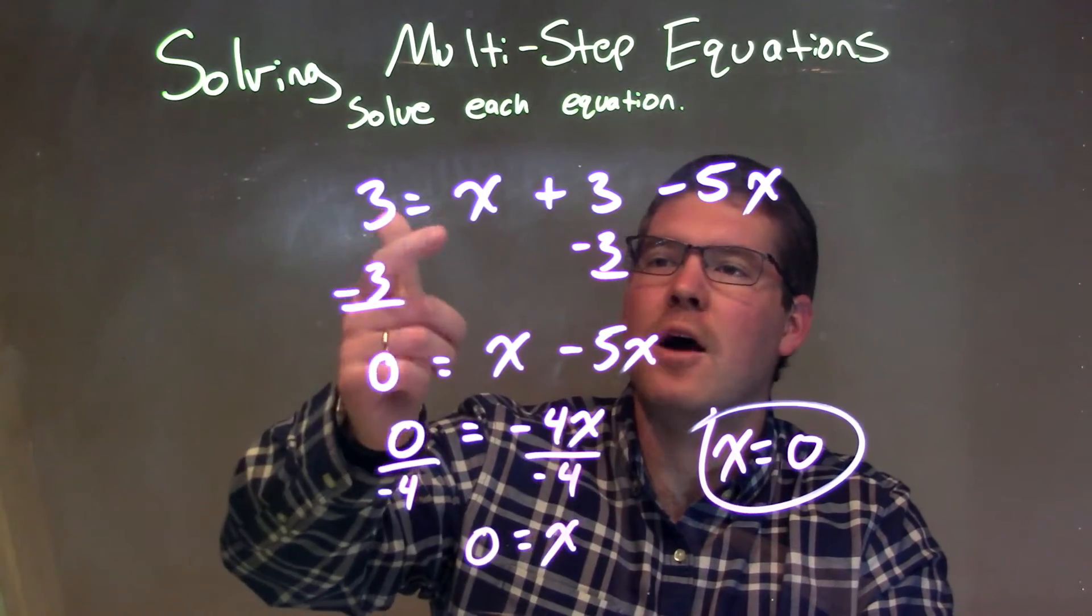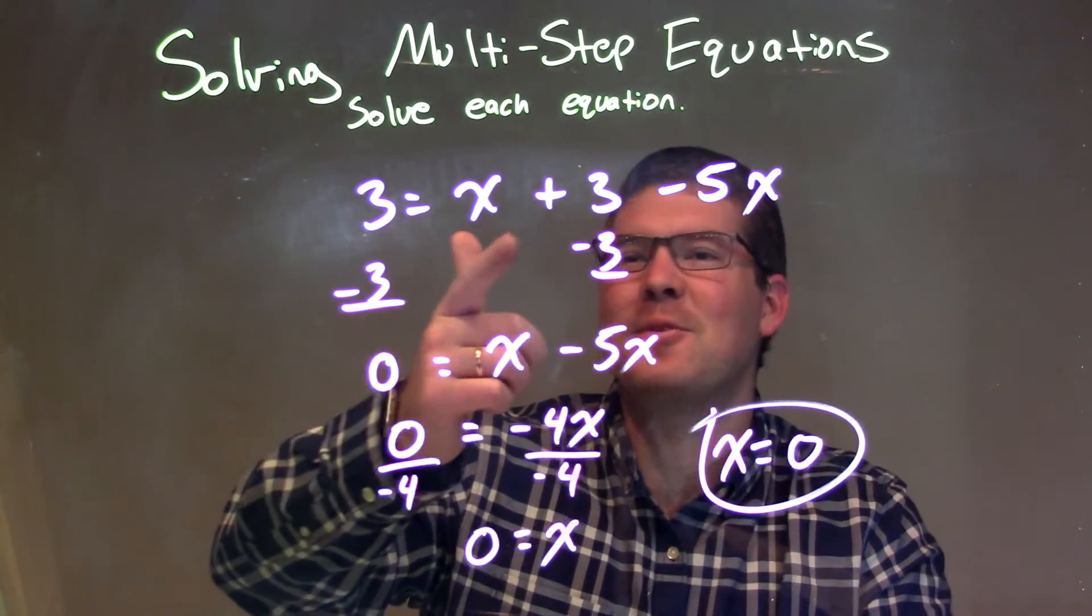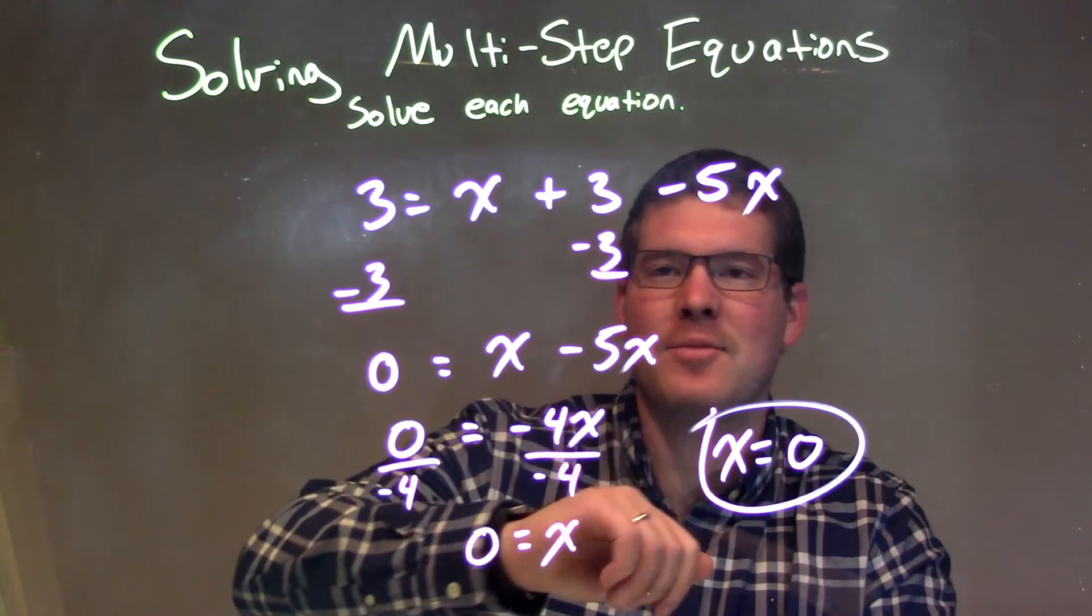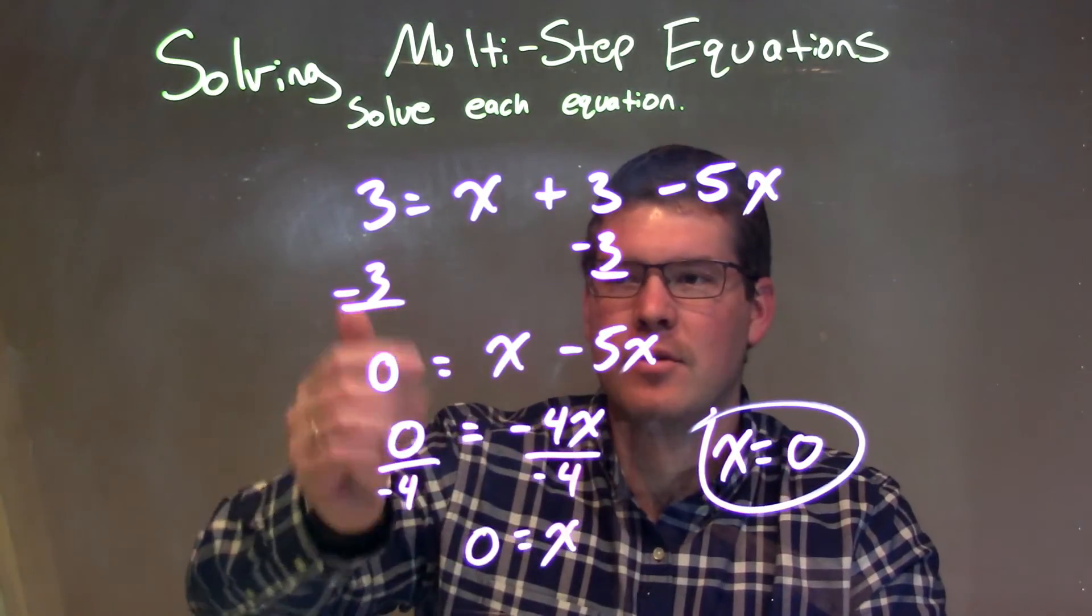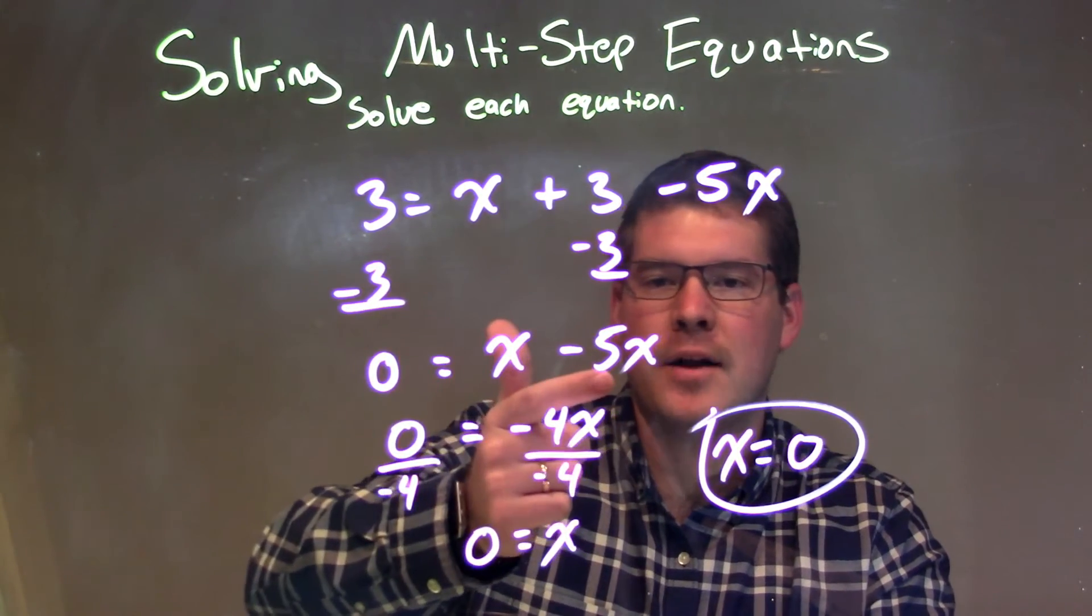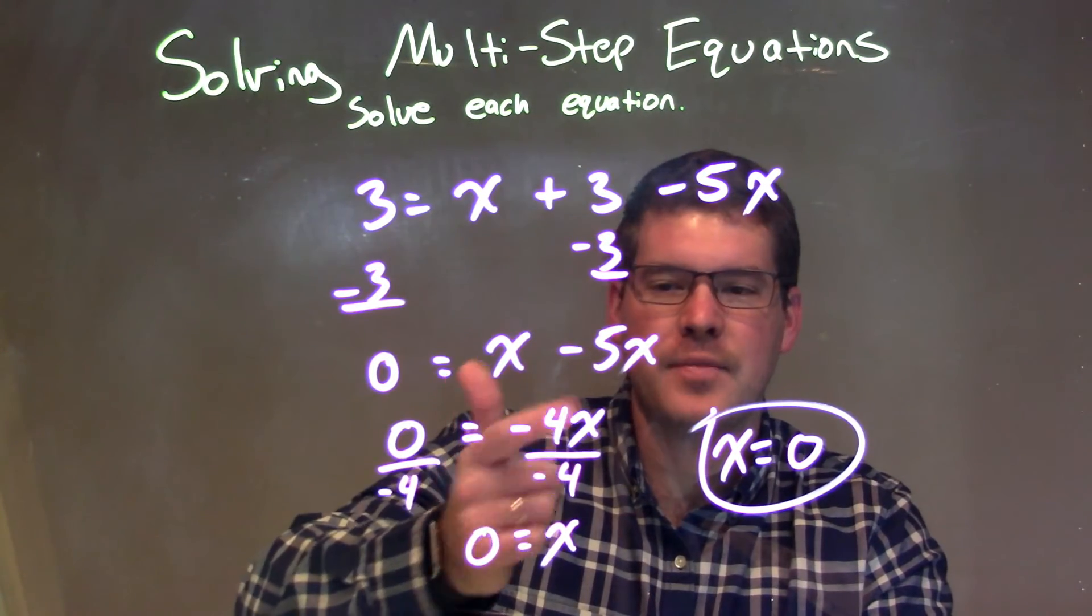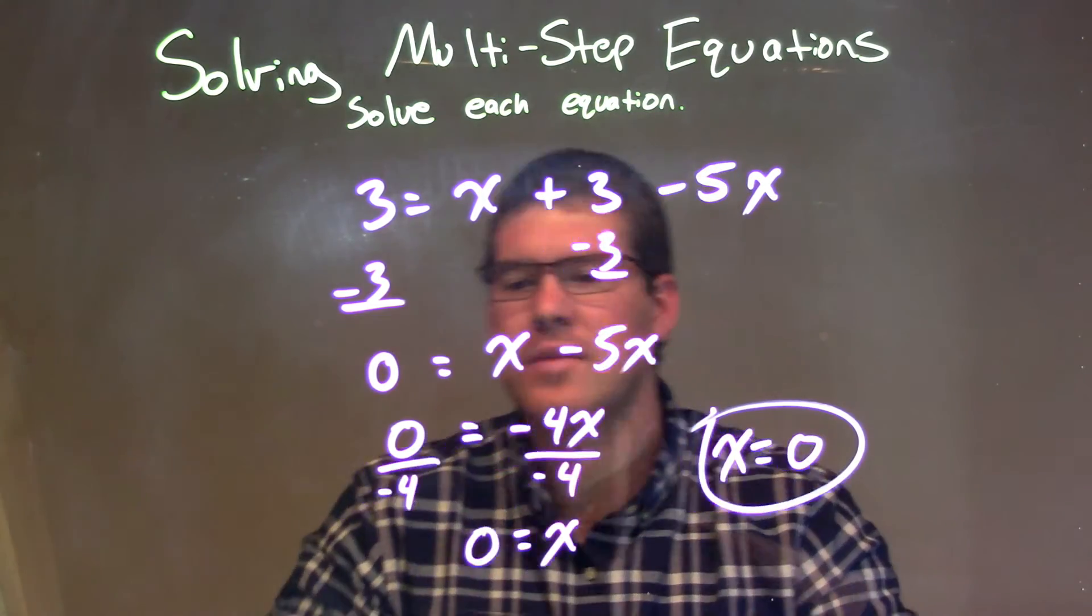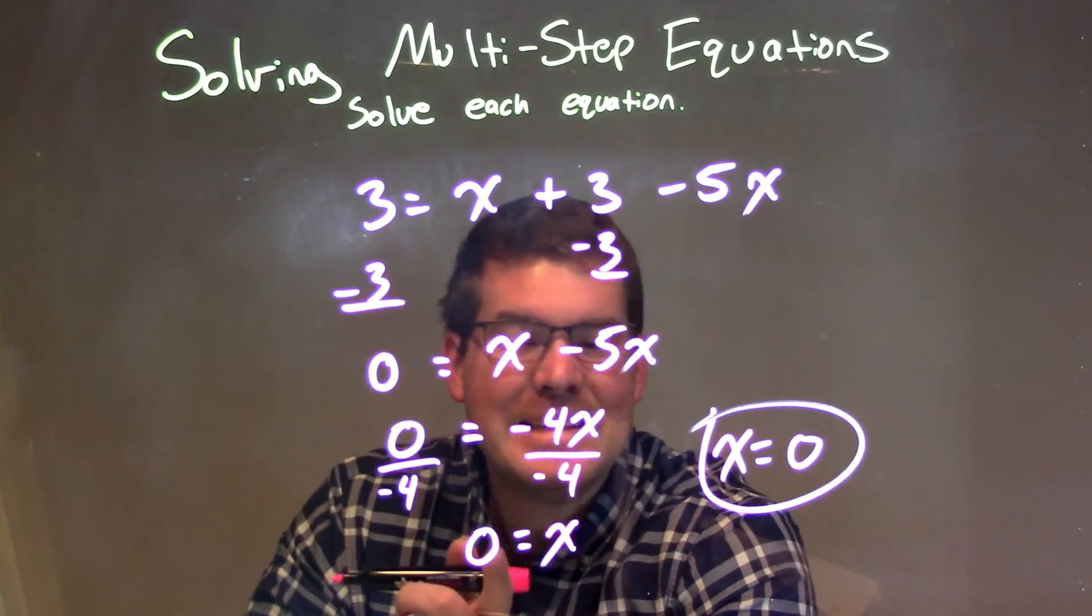Let's recap. 3 equals x plus 3 minus 5x. Brought my numbers together, subtracted 3 to both sides, and ended up with a 0 on the left. I then combine my x and my minus 5x together, get a minus 4x here. I divide by minus 4 to both sides, and 0 divided by minus 4 is a 0.